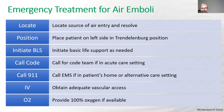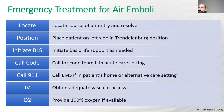Treatment for air embolism: first, locate the source of air entry and resolve it — disconnect if coming from tubing, or clamp above a catheter fracture and apply an occlusive dressing over the fracture site. Initiate basic life support if needed. If not needed, place the patient in a left lateral Trendelenburg position, which keeps air in the lower right ventricle and prevents it from moving into the pulmonary circulation. Call a code in the hospital; call 9-1-1 in the home setting.